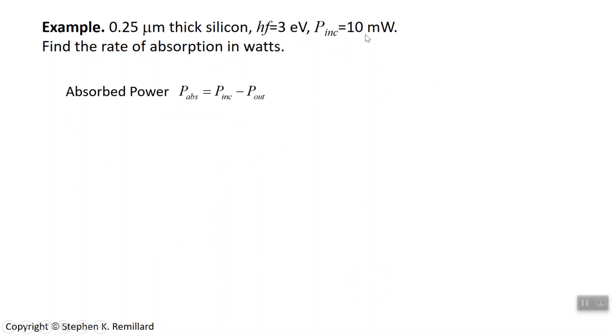You have 10 milliwatts going in. We're going to lose some power. Let's call it the absorbed power. So it's that 10 milliwatts minus whatever comes out. I just want to point out that this will be governed by the same equation we came up with just now for intensity. It's going to be the same exponential function because there's really no difference between power and intensity and flux.